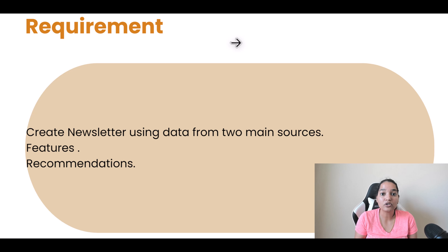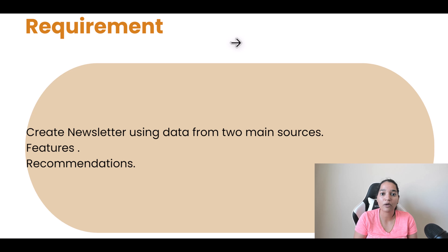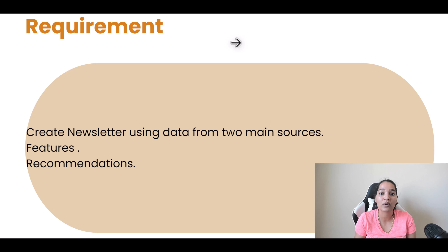We are going to create a newsletter using data from two main objects: one is the features object and the other is the recommendation object. The features object is going to store the various versions of iPhone and the features associated with those versions — for example, iPhone 11, 12, and 13 each have different features. We'll also create a recommendation object that stores recommendations for each particular version, such as how to use the camera or how to make the best use of iPhone 12. We'll use Microsoft Copilot to fetch some data, create these two objects, and in the flex template we'll source data from both to create a newsletter. We'll cover how to do that step by step in the next couple of lectures.